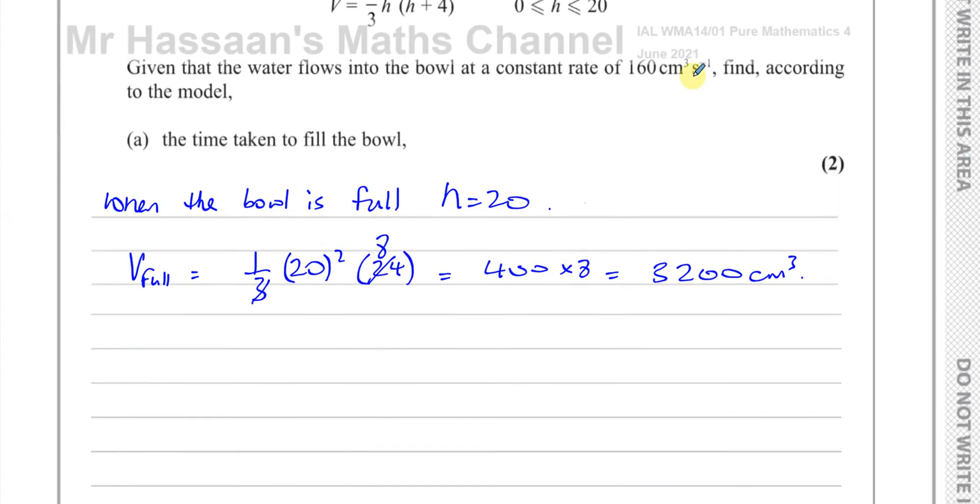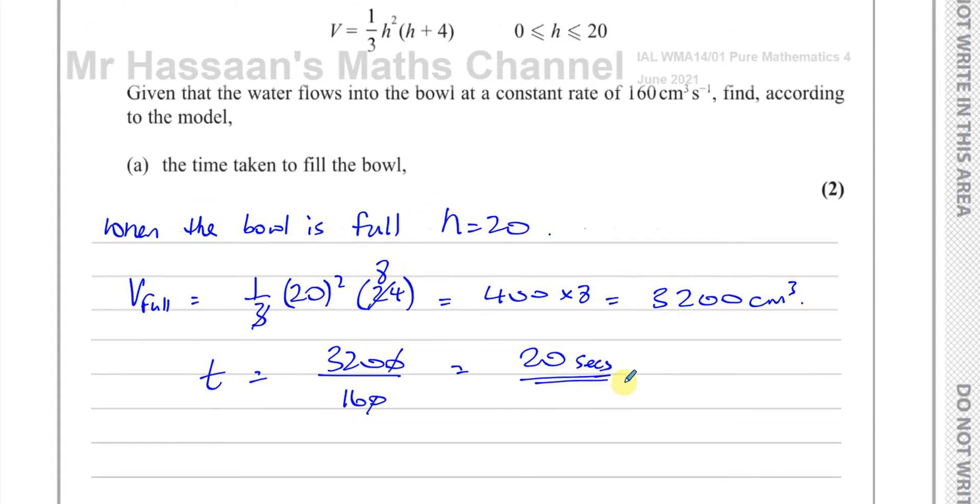It's going in at a rate of 160 centimeters cubed per second. The time it's going to take to fill up is 3,200 over 160. That's the volume going in every second. That's the total volume. So the time it takes is going to be the total volume divided by the rate of flow into the bowl. If I divide the total volume by the rate that's going to go in, you're going to be left with the number of seconds it takes to fill it up. So you have 320 over 16. That's 20 seconds. 20 seconds is the answer for question number 3, part A. Pretty simple one.